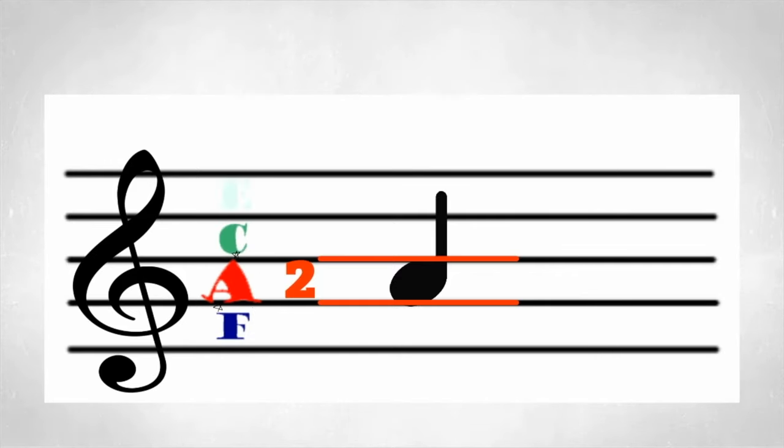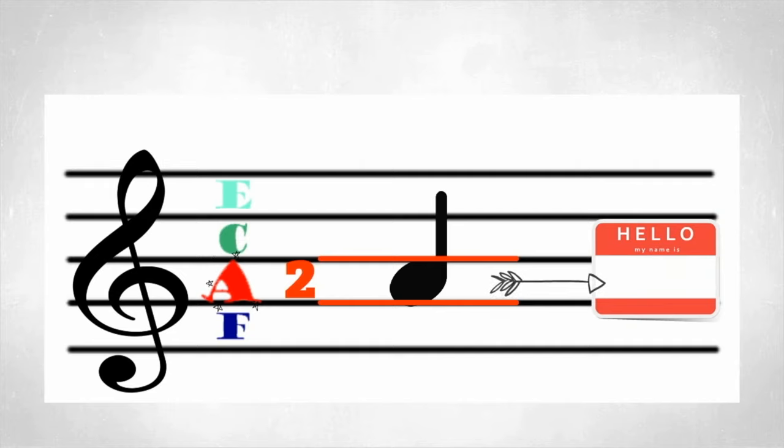Let's take a closer look at how I assign a letter name to a note. Here, this note falls on the second space. As you can see, the note head is in between the lines. Since we used the word F, A, C, E, face, on the spaces, you can easily see that this note is an A. Very cool.